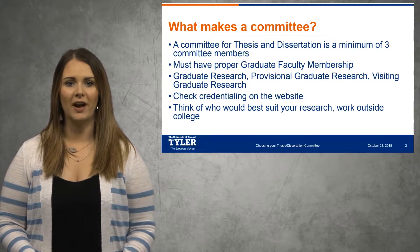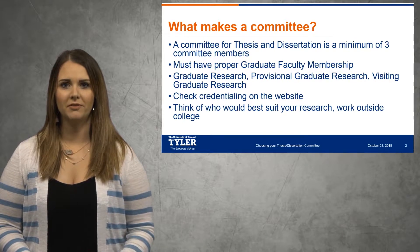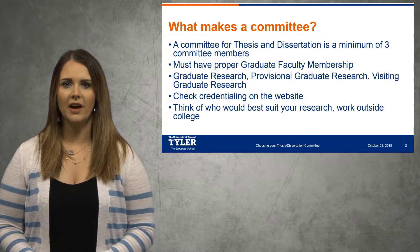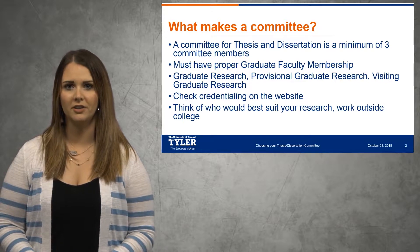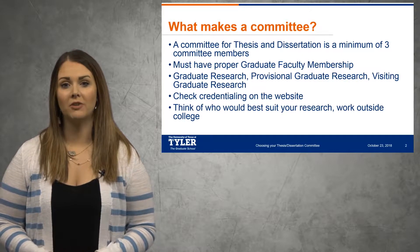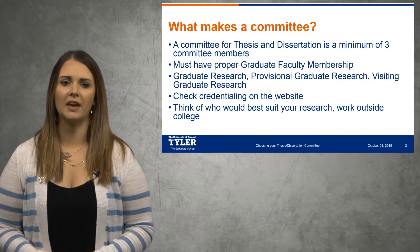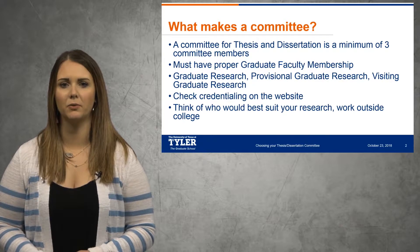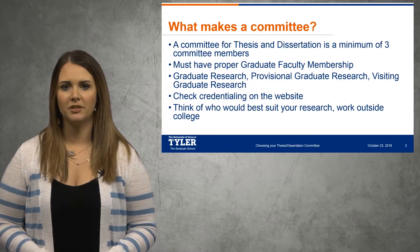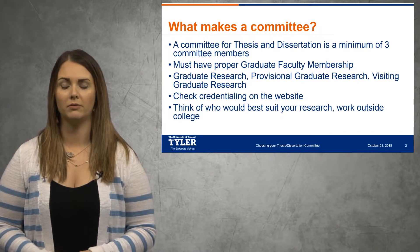So there are three statuses: graduate research faculty, provisional graduate research, and visiting graduate research status. Graduate research status is a faculty member who is participating in current research and has been approved by the graduate school as an active research faculty. Provisional graduate research faculty is someone who is a research member but hasn't quite had the full experience — maybe they're in their first year or first couple of years of research and haven't yet participated on any committees.